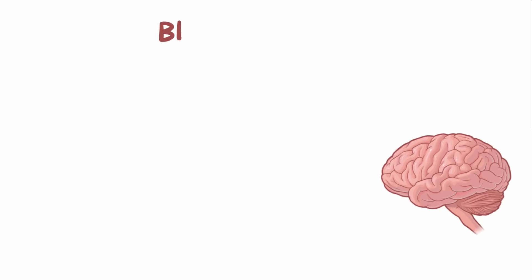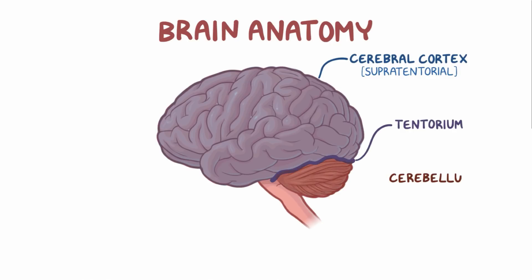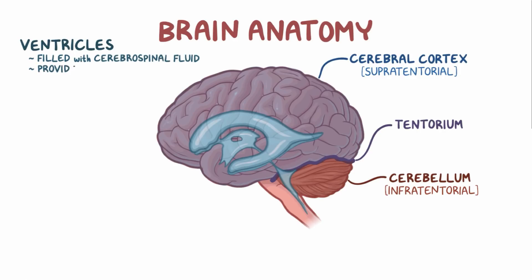Let's start with some basic brain anatomy. First off, there's the cerebral cortex, which is the part of the brain that's supratentorial, or above the tentorium, and the cerebellum, which is infratentorial, or below the tentorium. The brain also has four interconnected cavities called ventricles, which are filled with cerebrospinal fluid — a fluid that helps provide buoyancy and protection, as well as metabolic fuel for the brain.